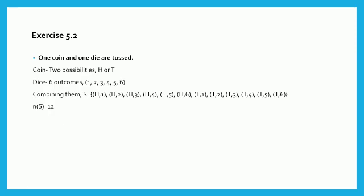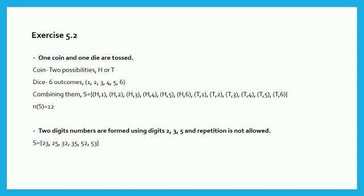Next question. Here in the question, it is given that two digit numbers are formed using digits 2, 3 and 5, but condition is repetition of digits is not allowed. So we will form the numbers and write the sample space. So our sample space will become S is equal to curly bracket open. 22 is not allowed since repetition is not allowed. So we will get 23, 25, 32. Again 33 we cannot write. 35, 52, 53. 55 we cannot write. So our number of sample points n of S is equal to 6.